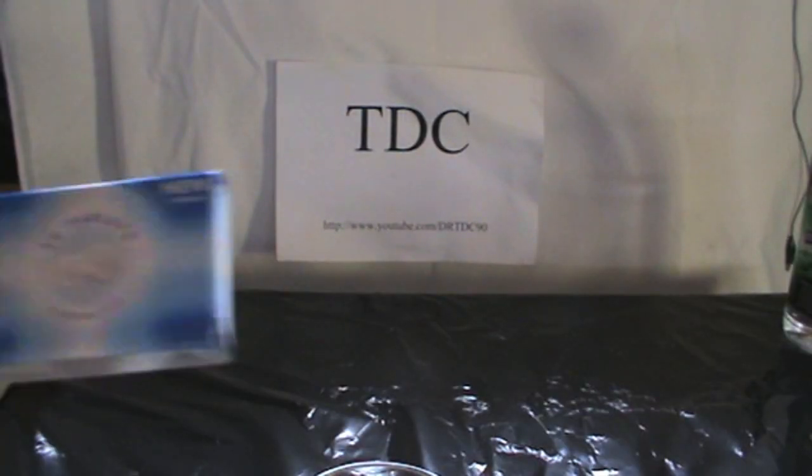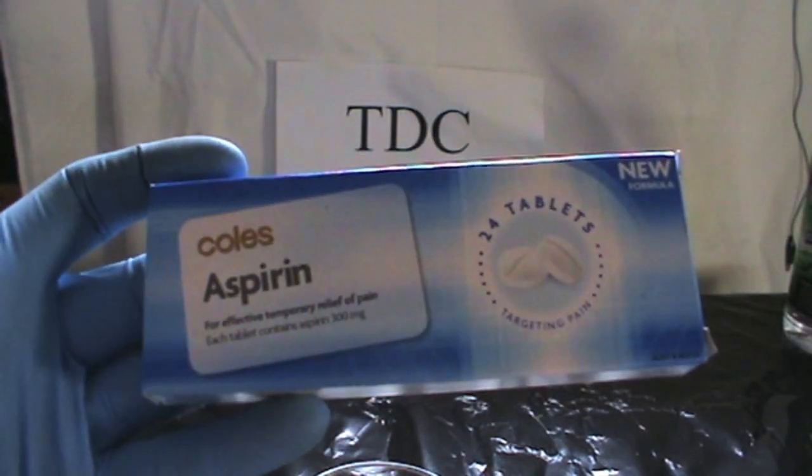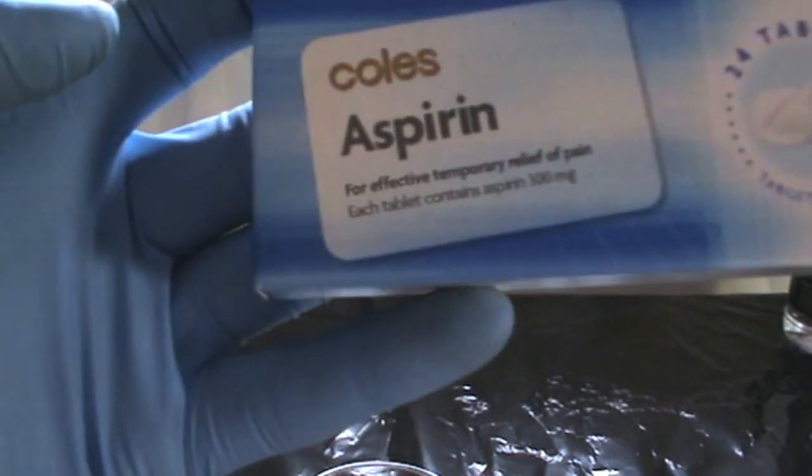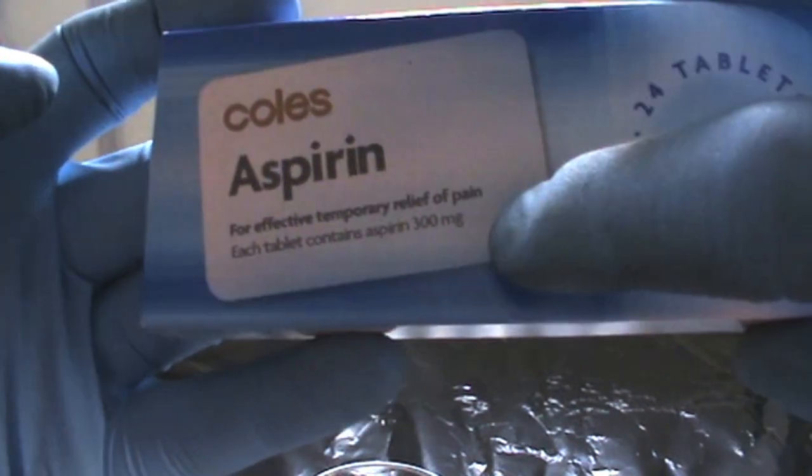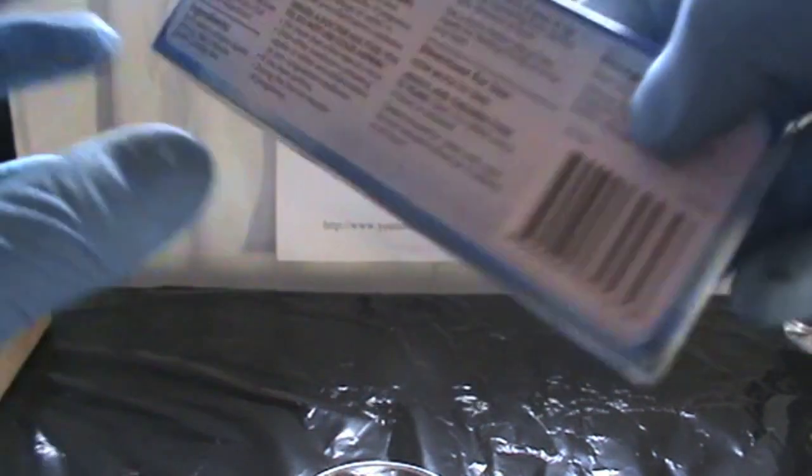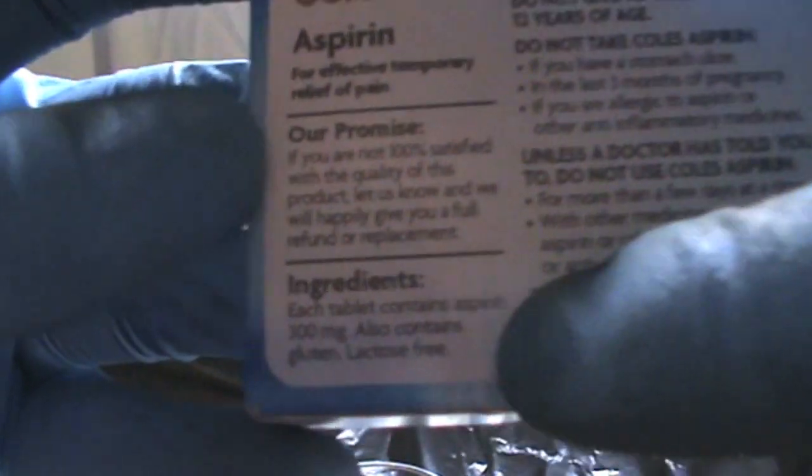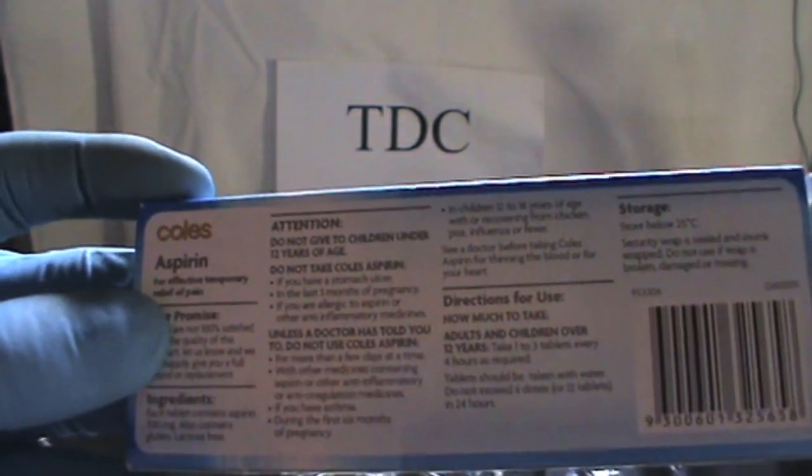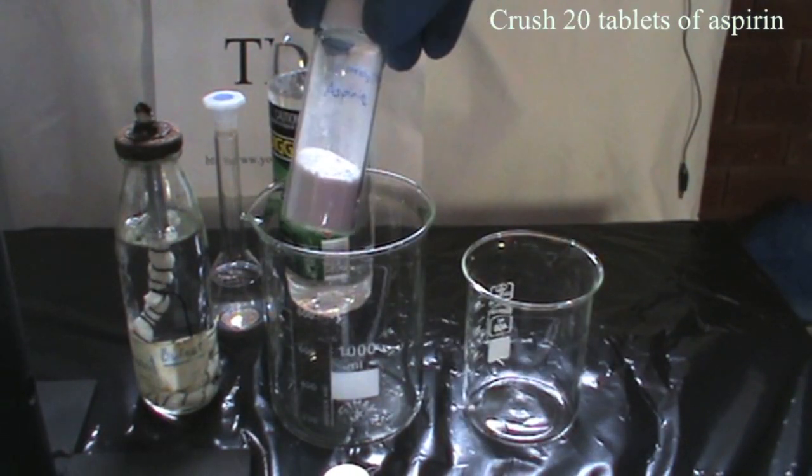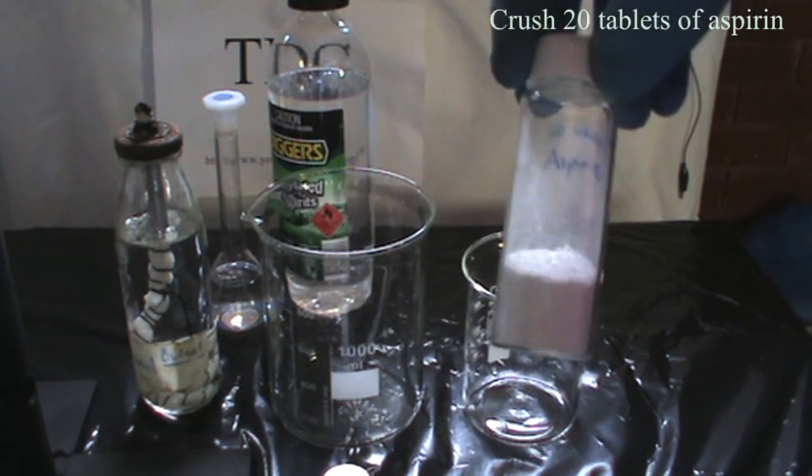To start the experiment, we need to buy some cheap aspirin from the supermarket. I bought a pack of 24 aspirin tablets weighing 300mg each for 95 cents. Note this is not pure aspirin as it contains gluten, however I will be showing you how to remove it to obtain pure aspirin. Crush 20 aspirin tablets to a fine powder.